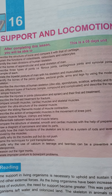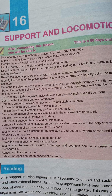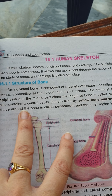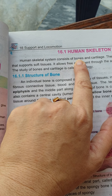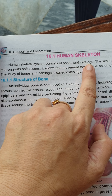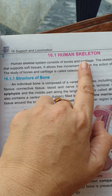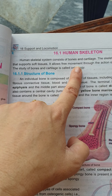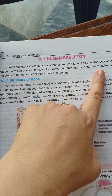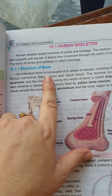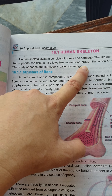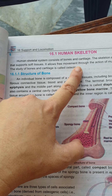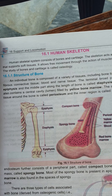In this chapter we will discuss the human skeleton as a support example in living organisms. The human skeleton consists of two parts: bone and cartilage. This skeleton is used as a framework that supports soft tissues, allows for movement, and through the action of muscles moves the body across different joints.